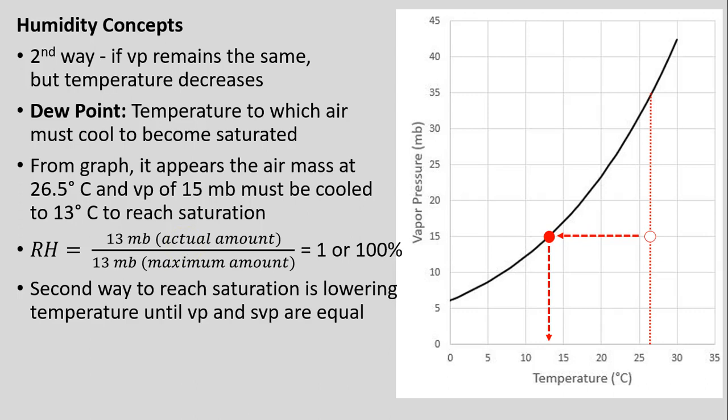When the dew point value is considered, if vapor pressure in the air is much lower than the saturation vapor pressure, the dew point temperature will be much lower than the present temperature. But if vapor pressure is nearly as high as the saturation vapor pressure — if those two numbers are close — then the temperature doesn't have to cool much at all before reaching saturation. The second way to reach saturation is lowering the temperature until vapor pressure and saturation vapor pressure become equal.